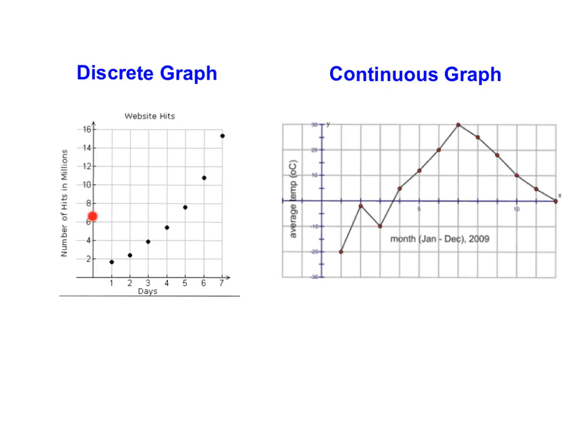The number of hits in millions. So after one day, we had almost two million hits. After two days, we had maybe two and a half million hits. After three days, we had four million hits. So these are distinct values. We're not checking it at one and a half days to see where it is. We're not checking it at one day and a few hours. We're just checking once a day. And so we're going to have distinct points right here.